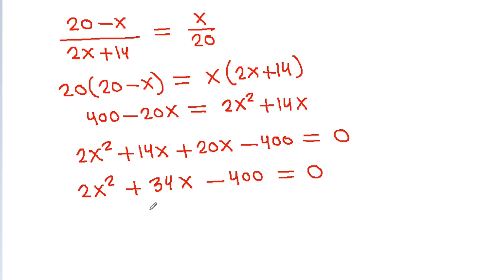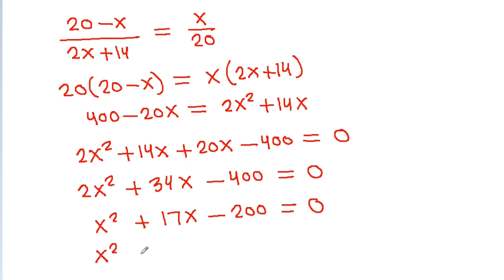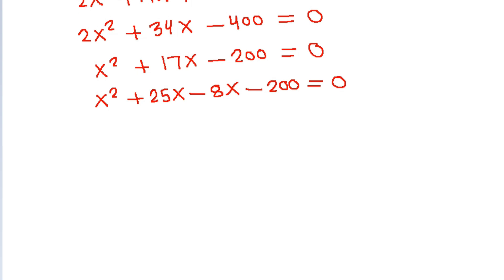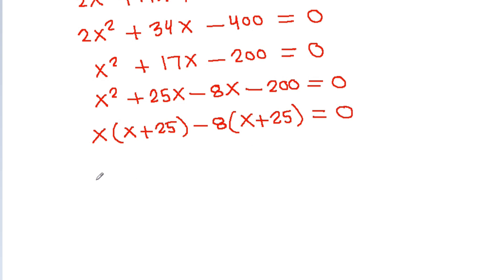If we divide by 2, then X squared minus 17X minus 200 equals 0. And X squared minus 17X is plus 25X minus 8X, minus 200 equals 0. So it is X times (X plus 25) minus 8 times (X plus 25) equals 0, and (X minus 8)(X plus 25) equals 0.